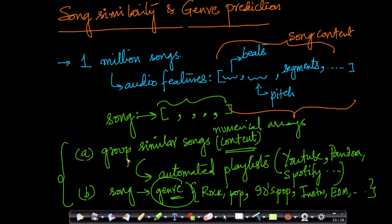So we're solving two sub-problems here. One is grouping similar songs to build automated playlists. The second problem is, given a song, we'll find what the genre of the song is. This is massive amount of data. It's almost a million or 10 lakh songs that we work off.